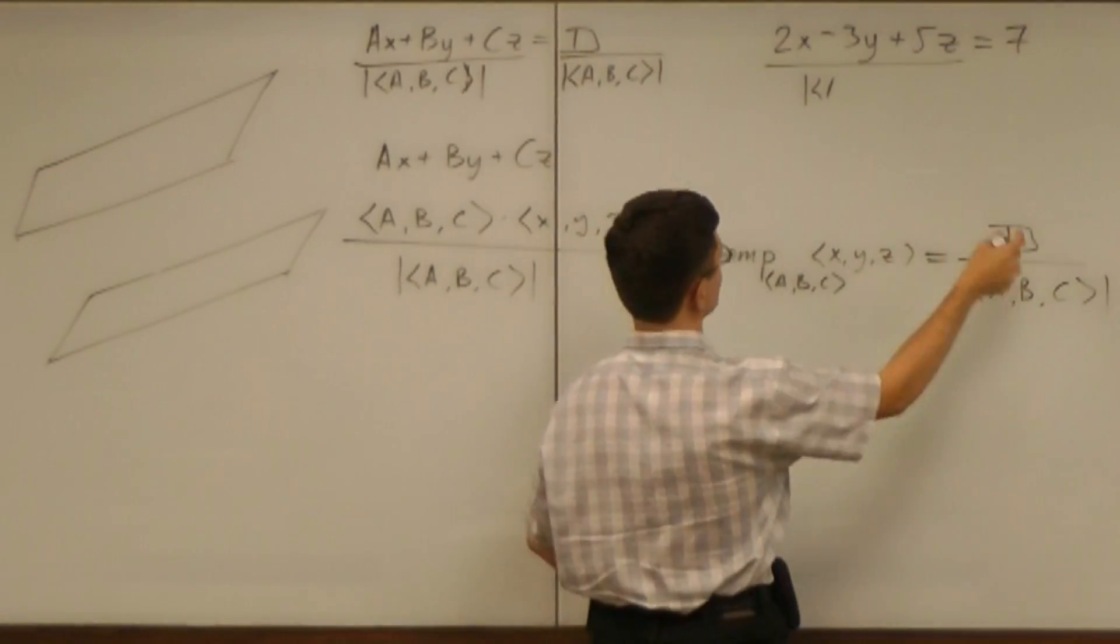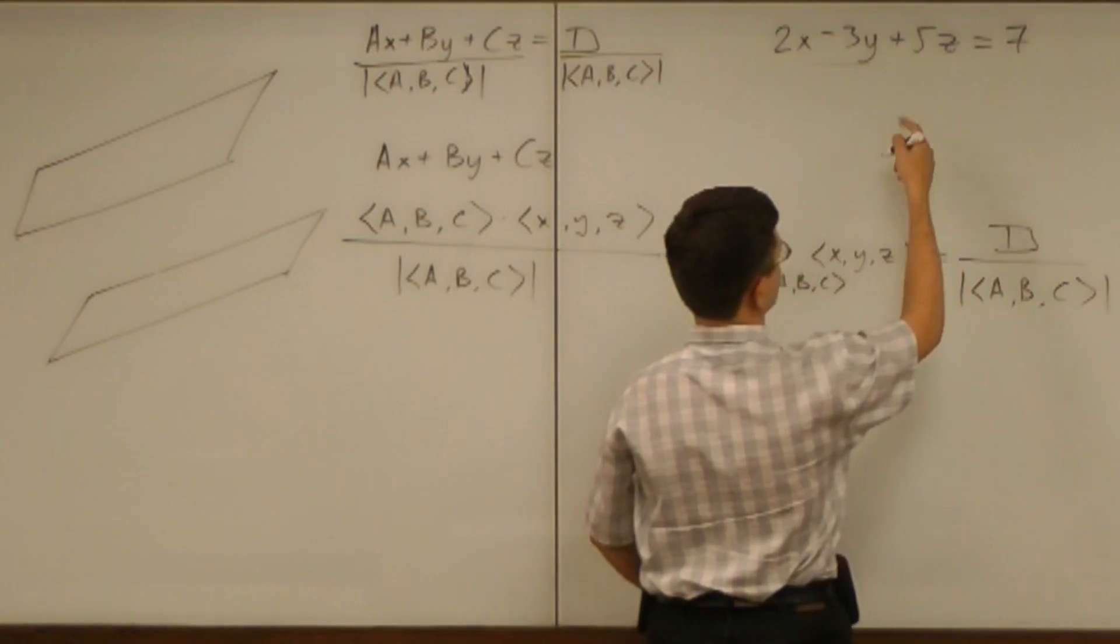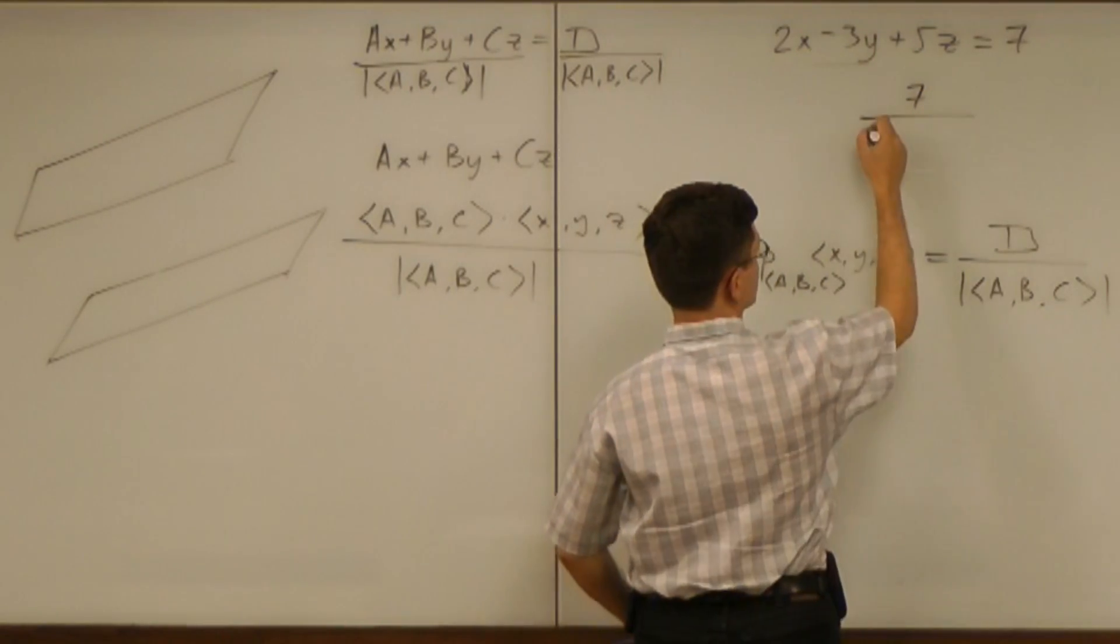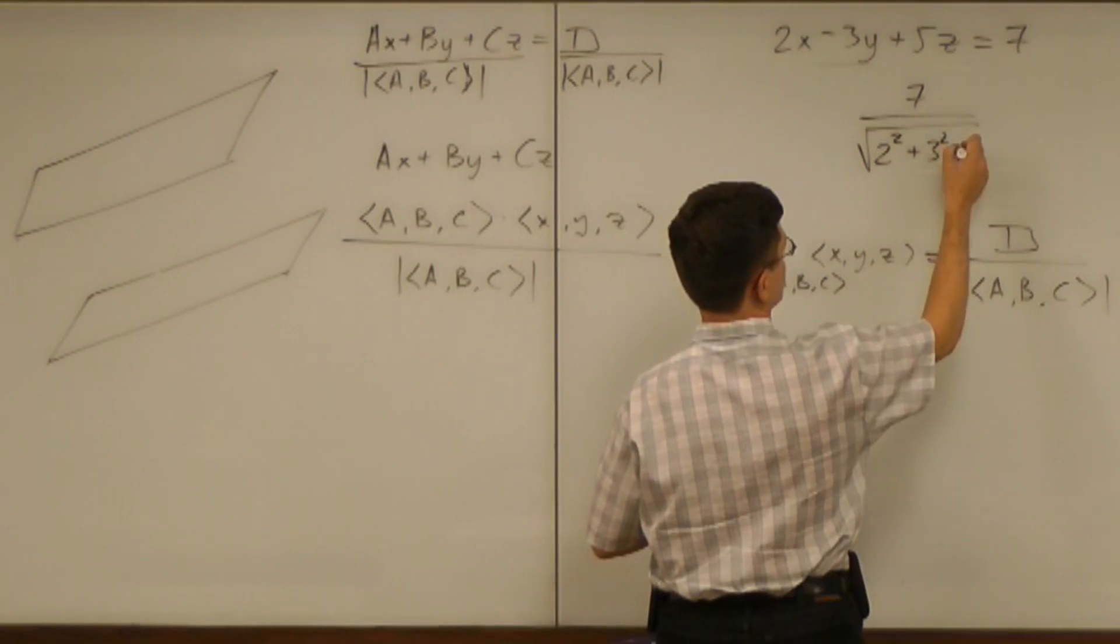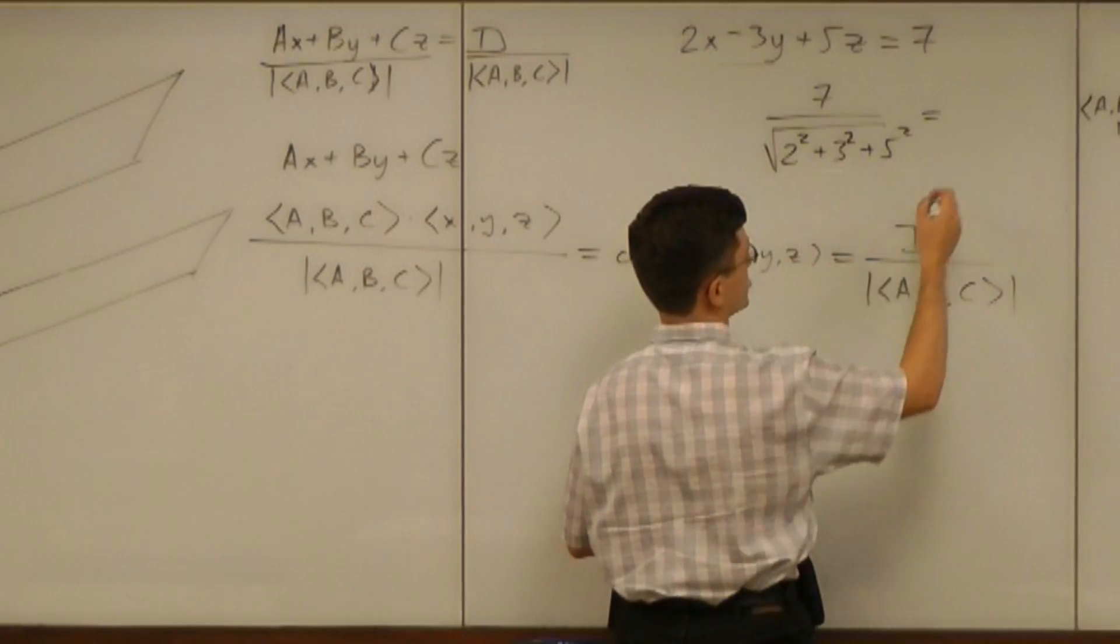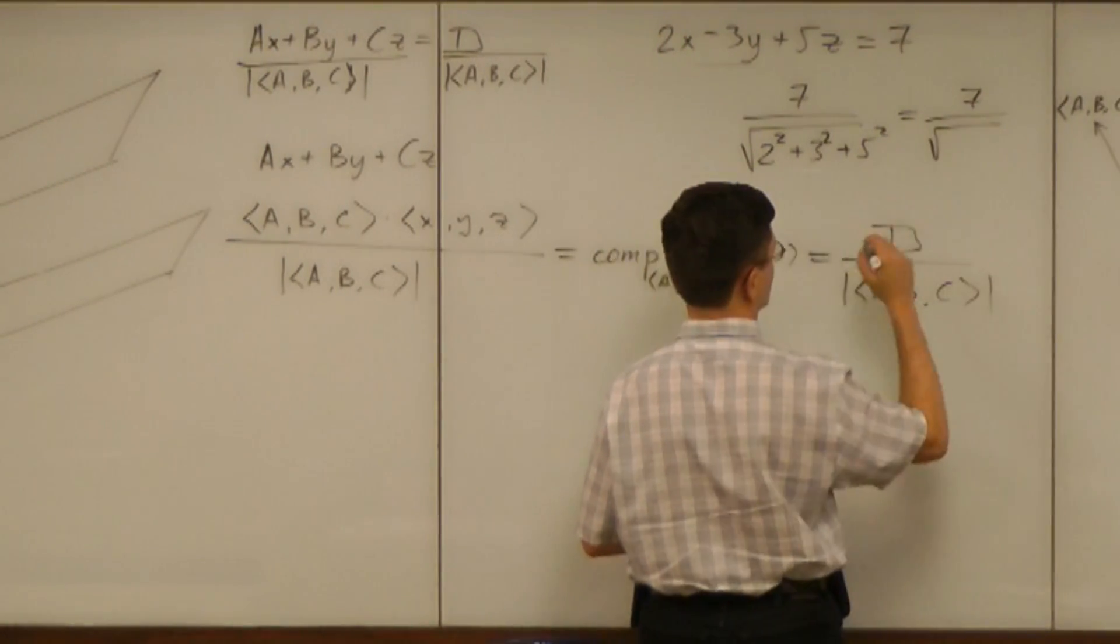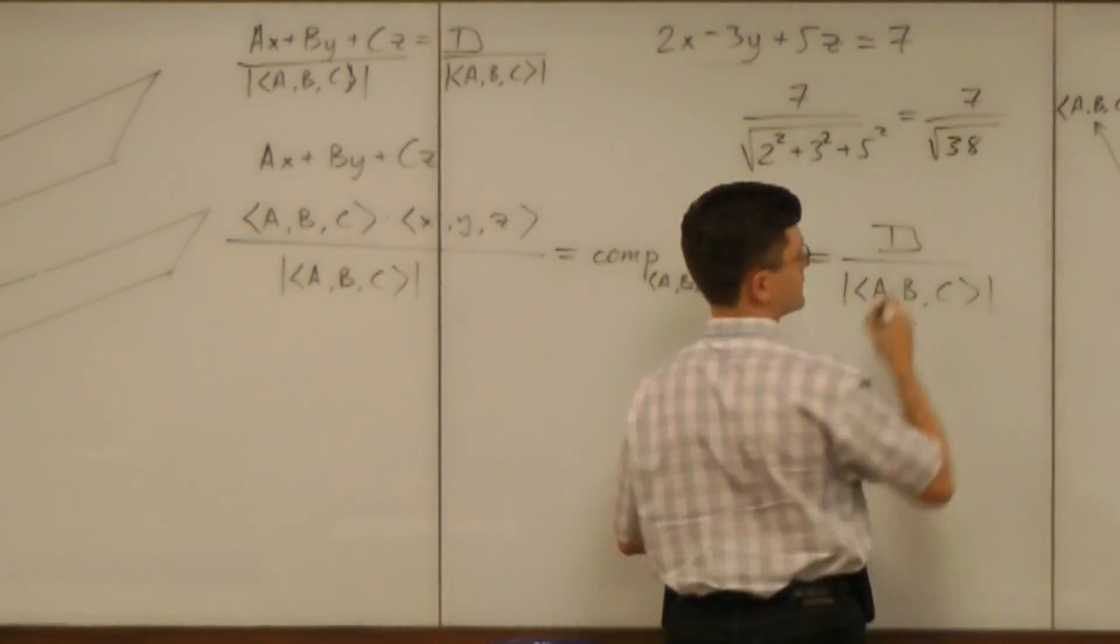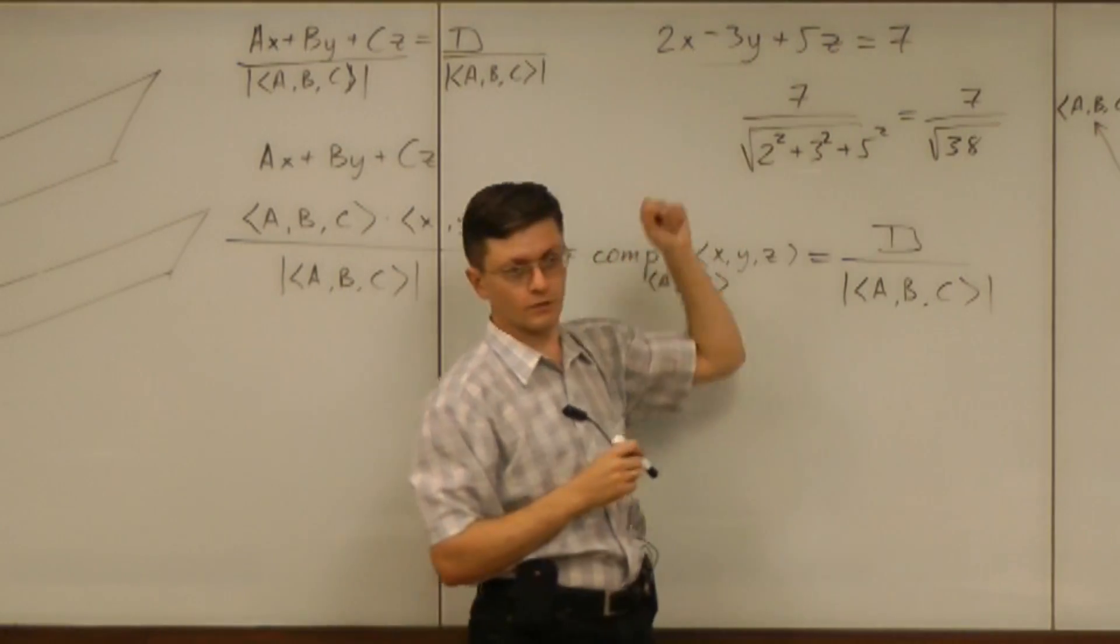So that number has geometric meaning. So in that particular example, the number 7 over square root of 2 squared plus 3 squared plus 5 squared. That number has a meaning. 4 plus 9 plus 25, 38. So what's the meaning of that number for that plane?